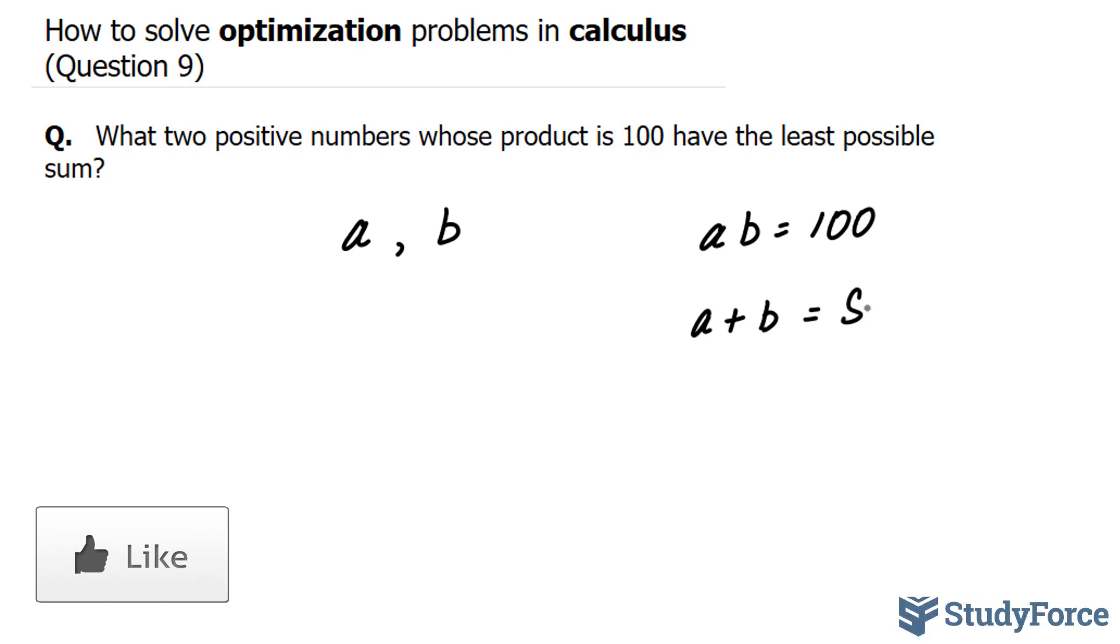Notice that we have three unknowns here, A, B, and S. That's a problem for us. When it comes to optimization problems, you want usually a maximum of two unknowns. So what we can do is rewrite this first equation so that it's in terms of the other variable.